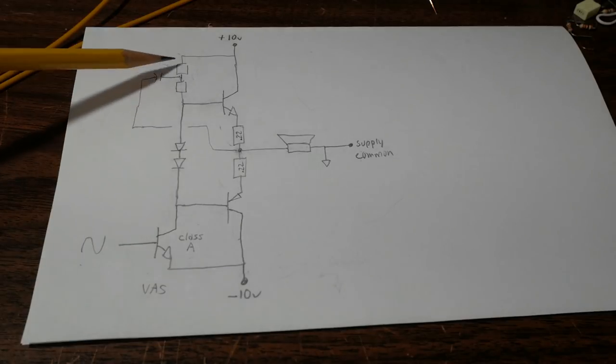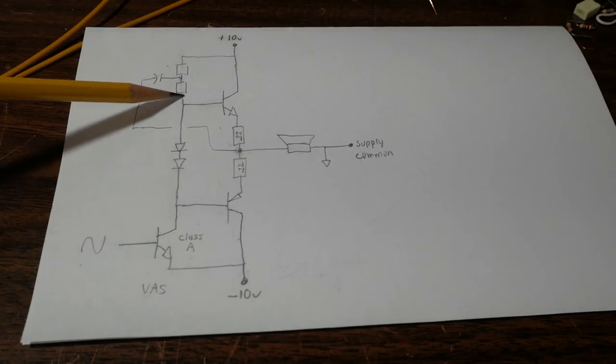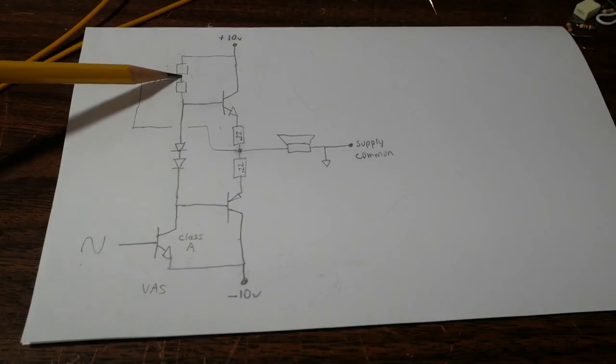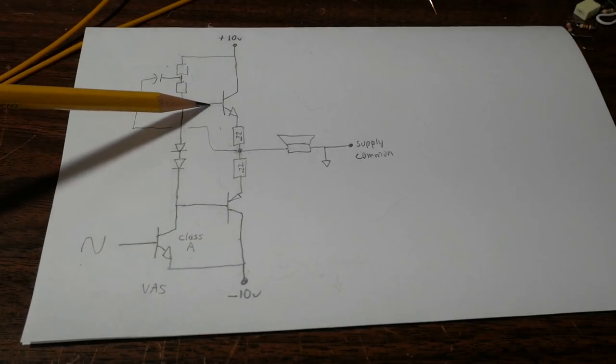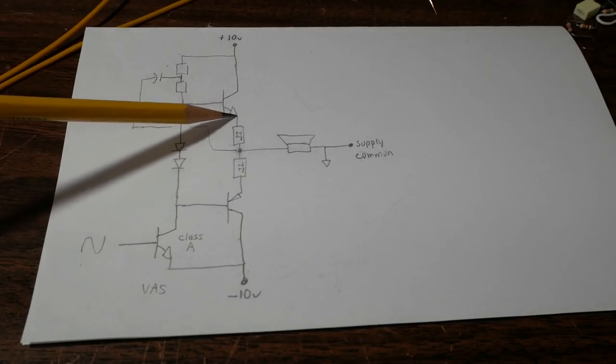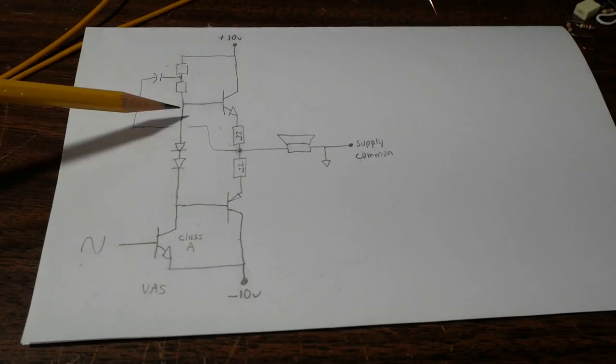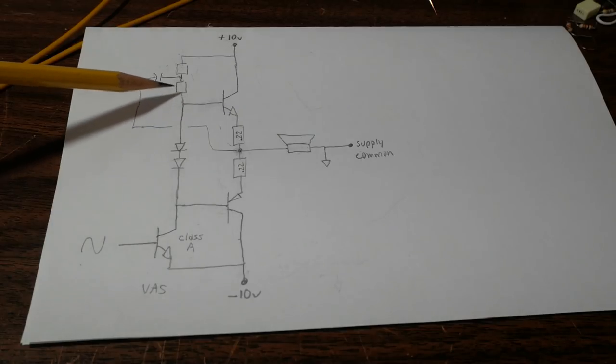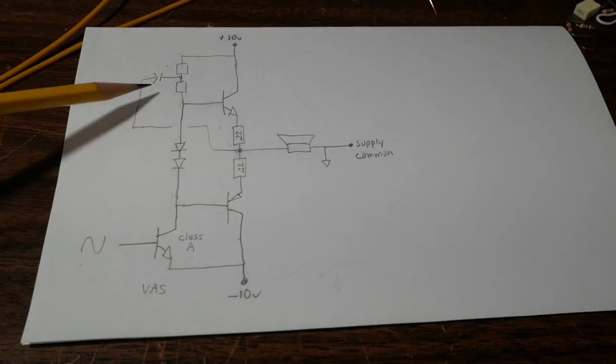Another thing you might run across is these resistor values may not be the same. Keep in mind that you do have the base-to-emitter drops. At higher current, you'll have a significant voltage drop across this resistor as well. So the designer might be trying to optimize this circuit.